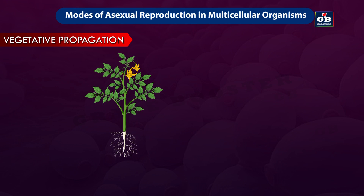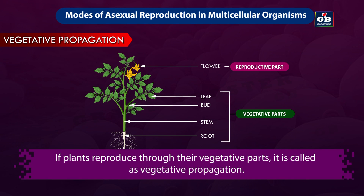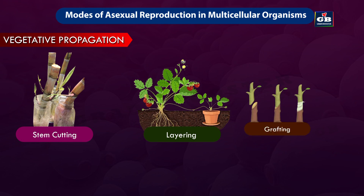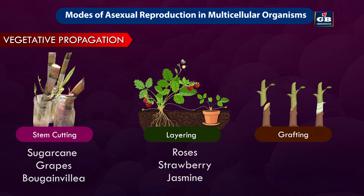Vegetative propagation: The flower is the reproductive part of the plant, whereas stem, root, branches, leaves, and buds are vegetative parts. If plants reproduce through their vegetative parts, it is called vegetative propagation. Cutting, layering, and grafting are the three major techniques. Sugar canes are grown by stem cuttings, roses can be propagated by layering, and many fruit plants and trees are grown by grafting techniques.